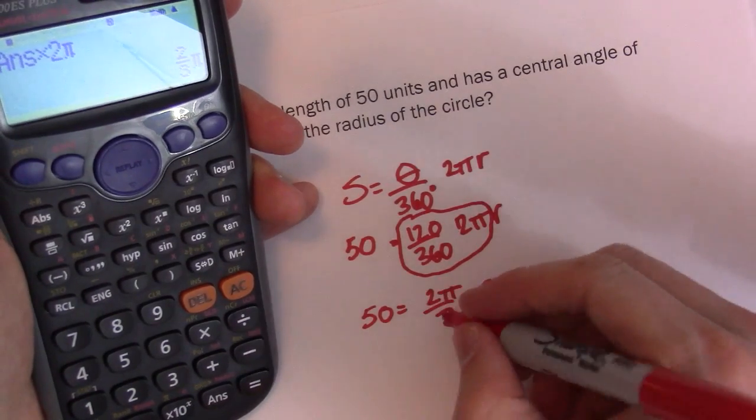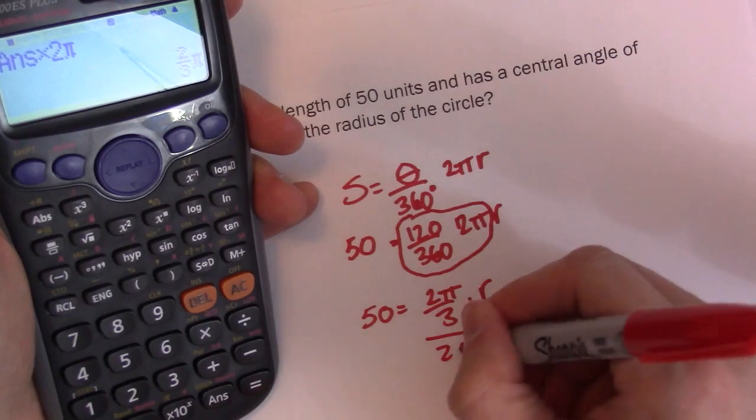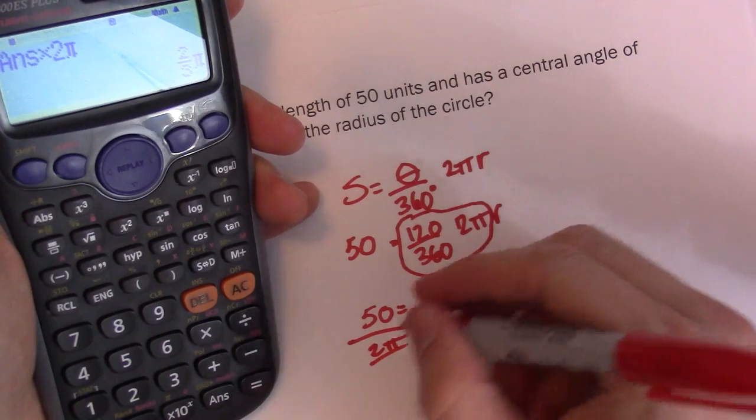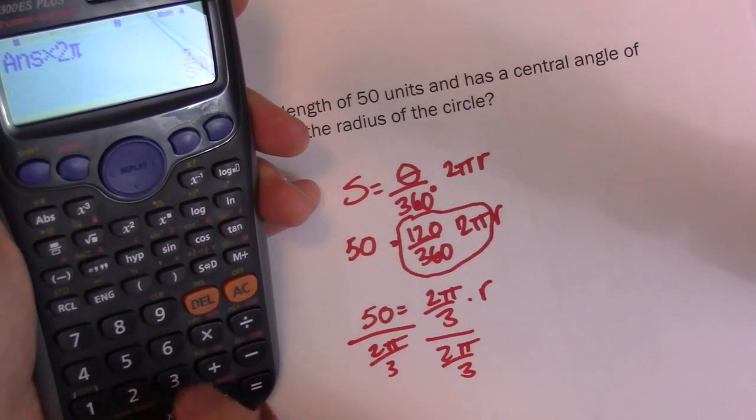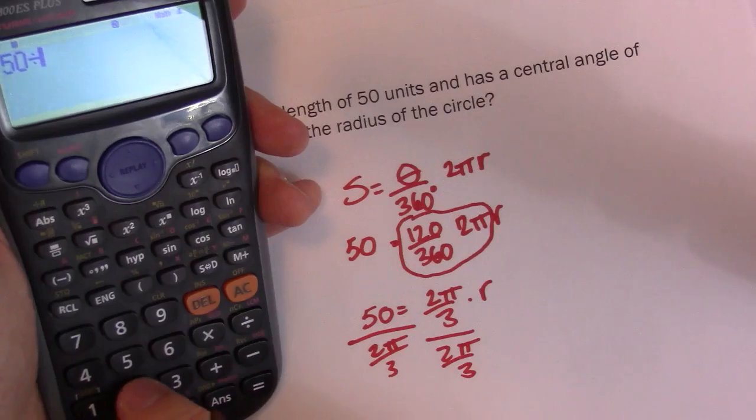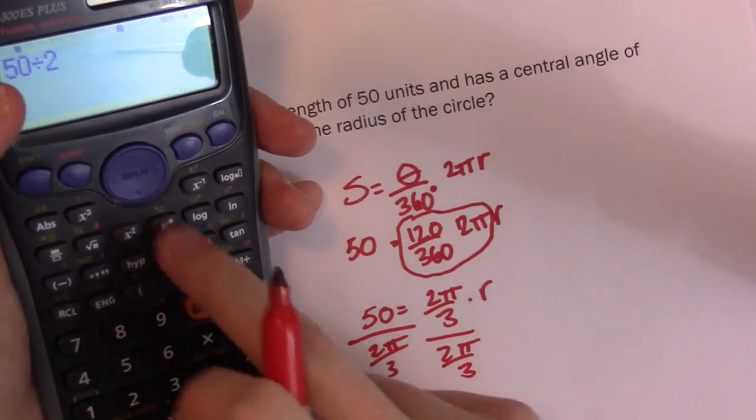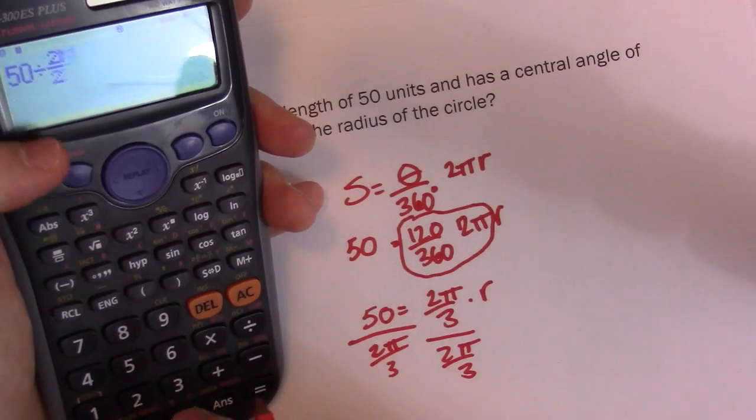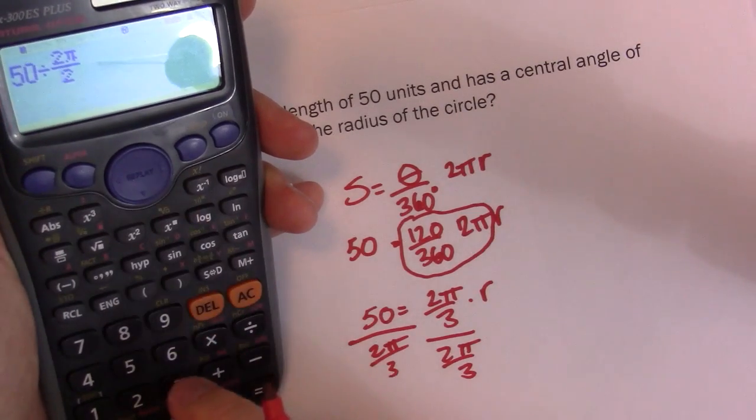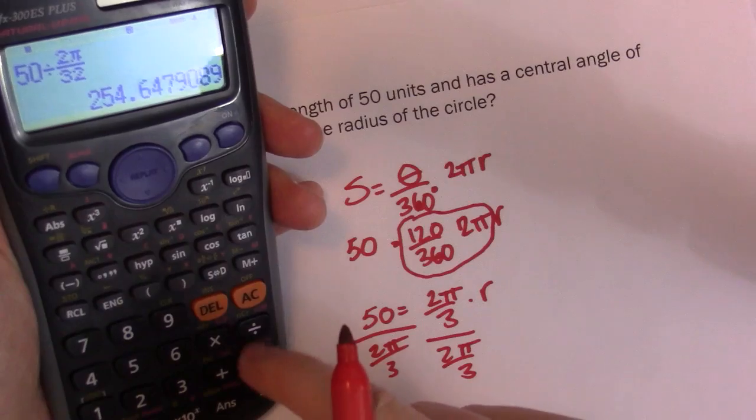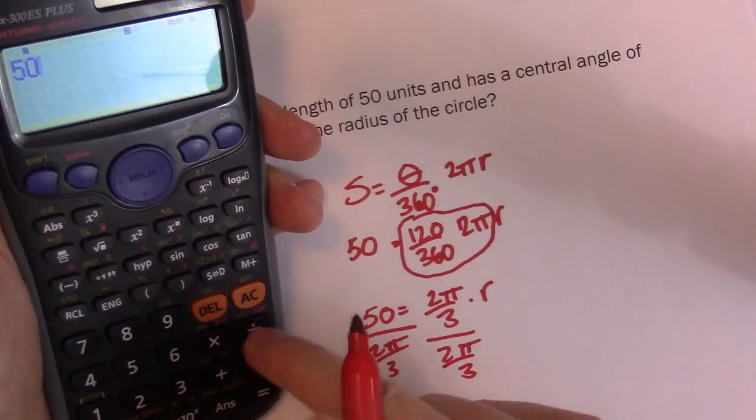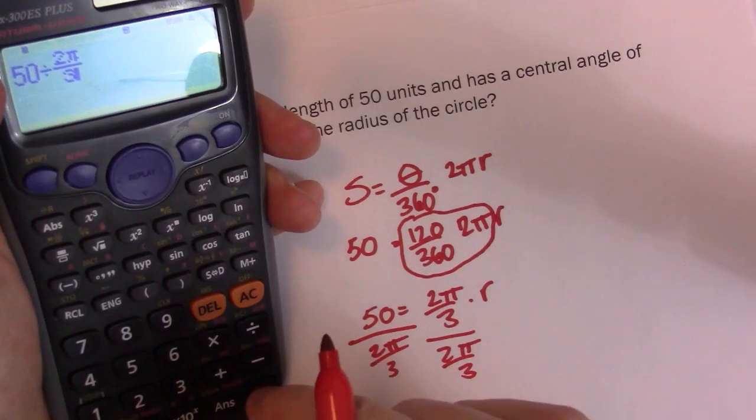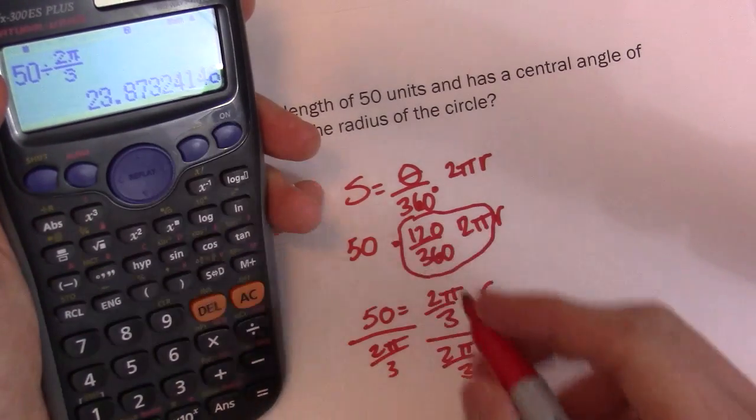So what I'm going to do is I'm just going to divide both sides by this. So 2 pi over 3, 2 pi over 3. So I get 50 divided by 2 pi over 3. And it gives me back this guy.